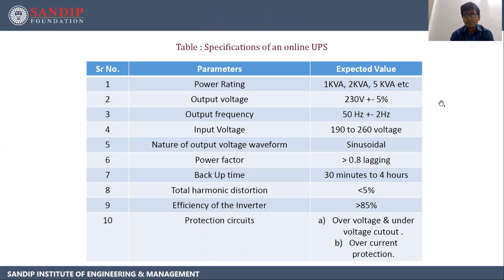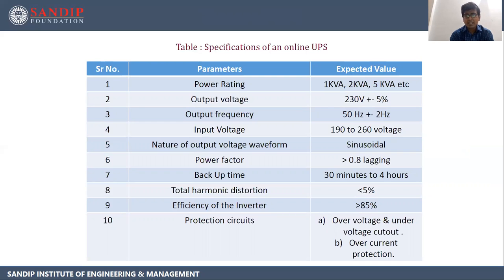Let's see the specifications of online UPS. Power rating: online UPS comes with 1 kVA, 2 kVA, 5 kVA. Output voltage is 230 V with a variation of plus or minus 5%. Output frequency is 50 Hz with a variation of plus or minus 2 Hz. Input voltage is 190 to 260 V. Nature of output voltage waveform is sinusoidal. Power factor is greater than 0.8. Backup time is 30 minutes to 4 hours. Total harmonic distortion (THD) is less than 5%. Efficiency is greater than 85%, and protection circuits include over voltage and over current protection.